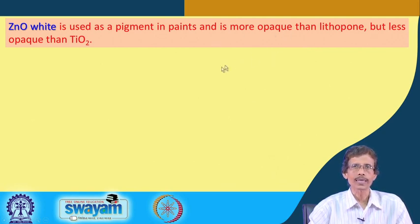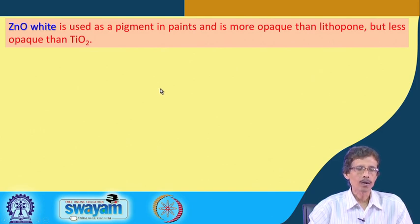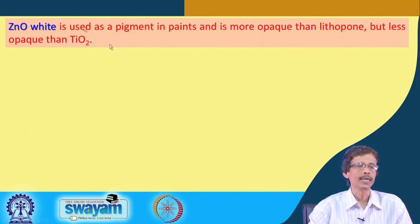The order of preference for white inorganic pigments is: first titanium dioxide, then zinc oxide, and then lithopone.